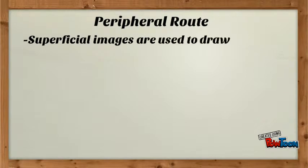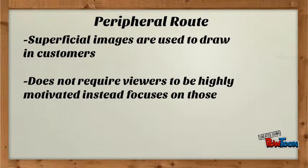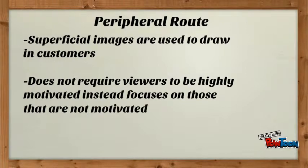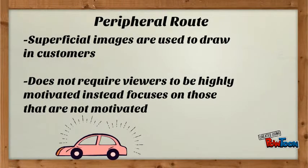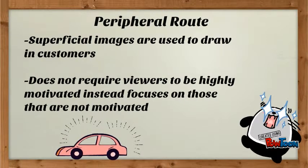The other method in the Elaboration Likelihood Model is the Peripheral Route. This method is the opposite of the central route. It does not require the people to be highly motivated. Instead, they are focused on drawing in individuals who are not too interested in their products by using superficial images and music. This method's aim is to stimulate your senses and emotions.